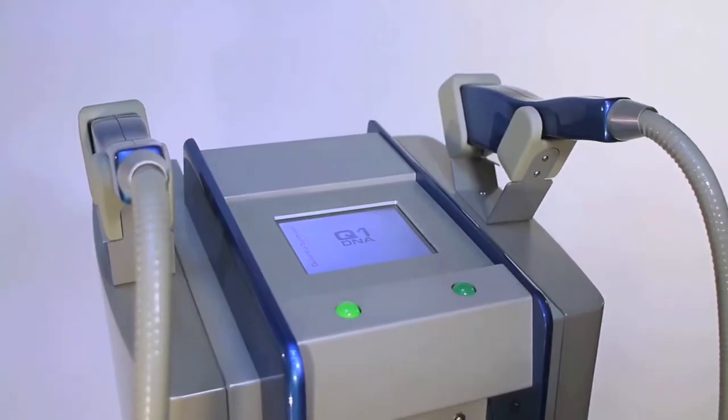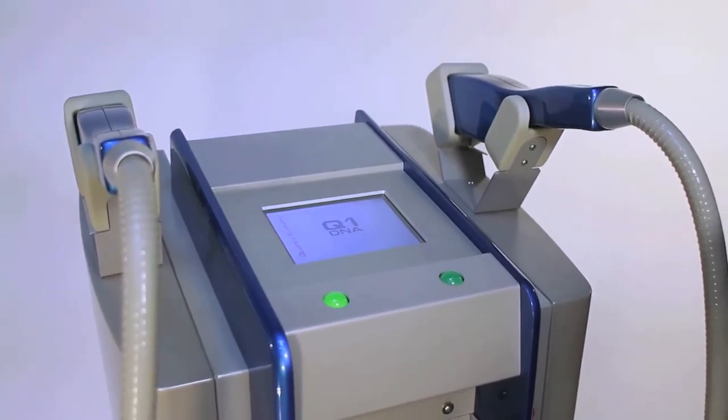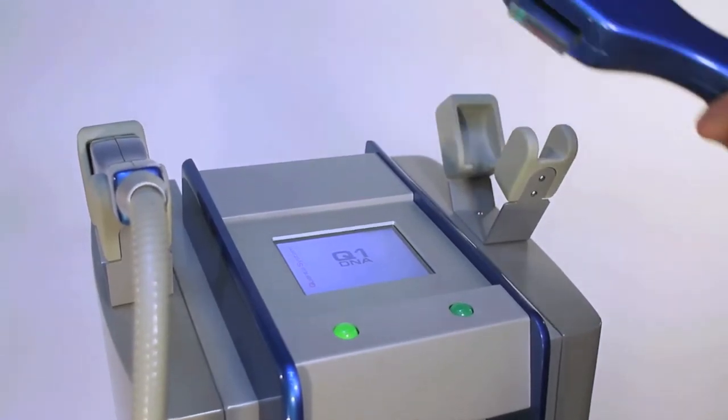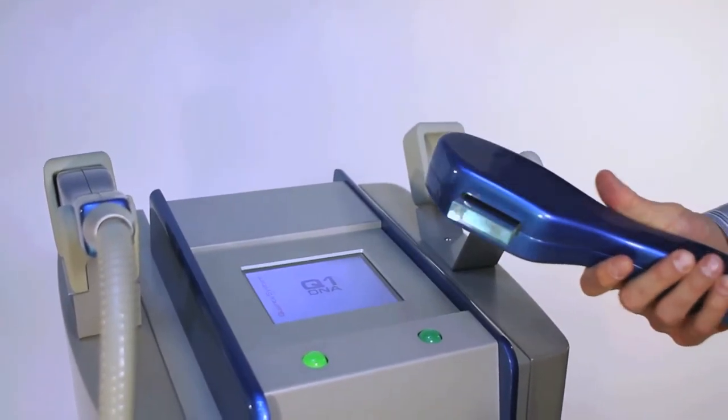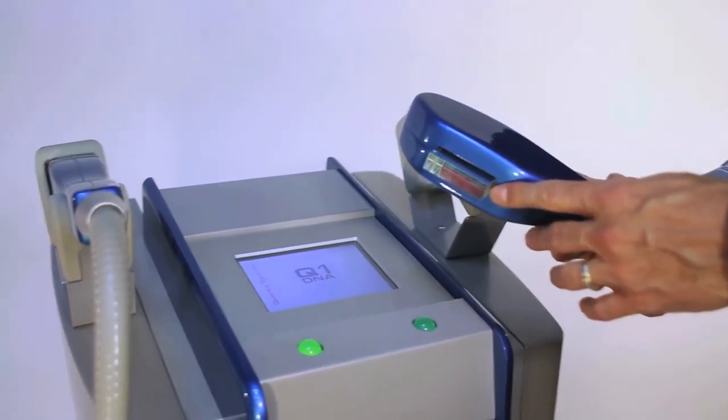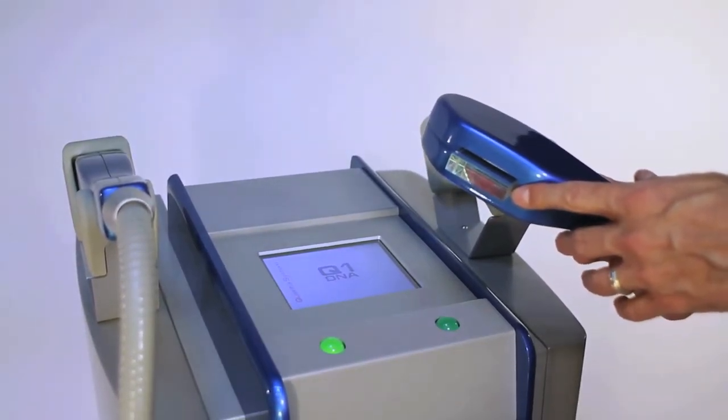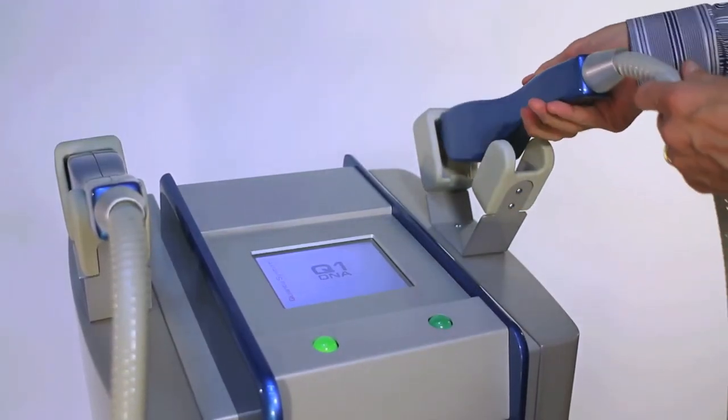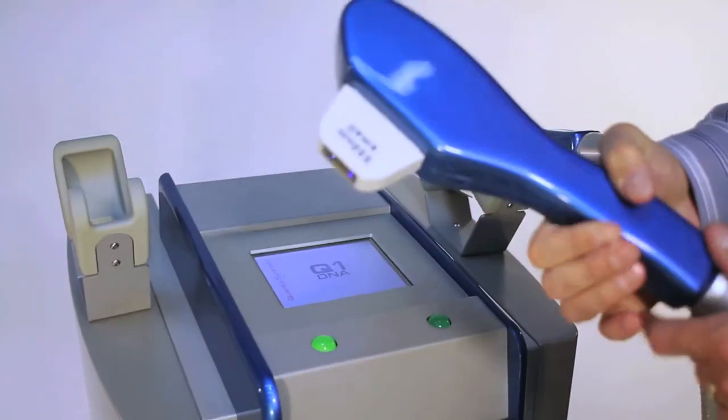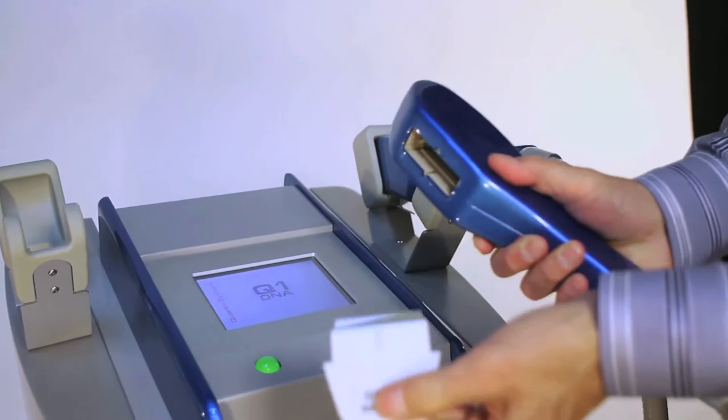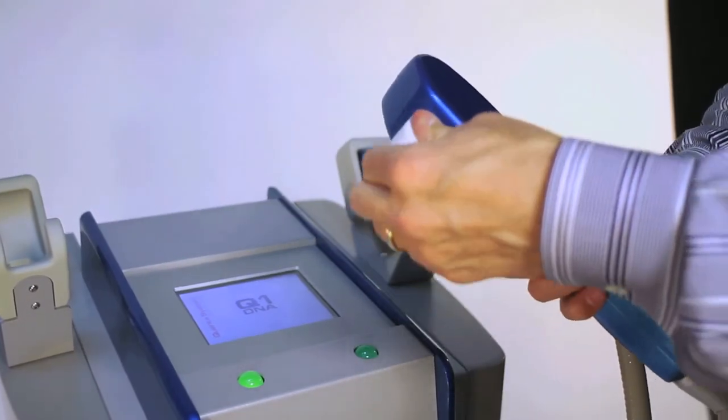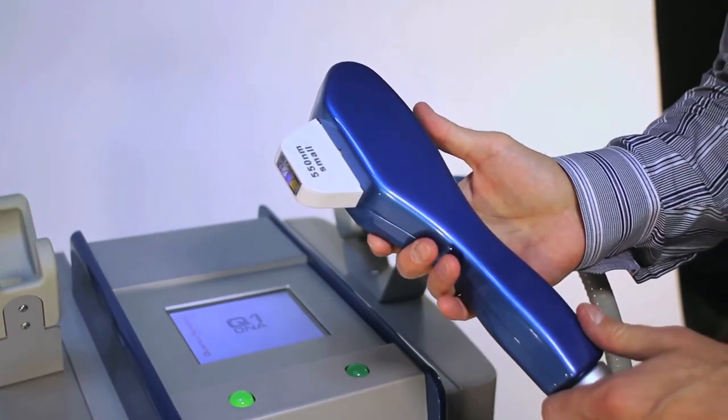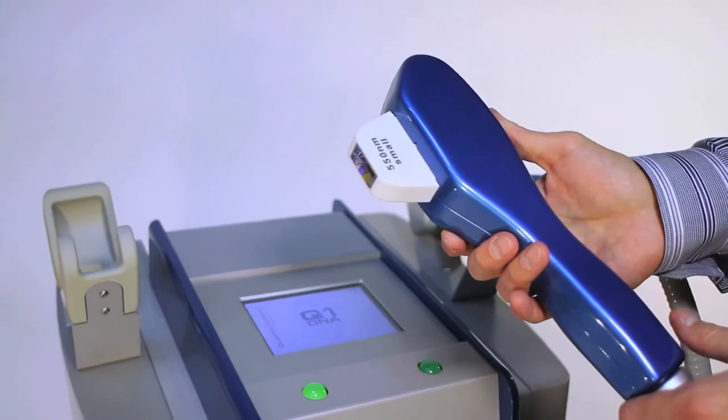This is the Quanta Eterna IPL. One of the unique features about this device is that it comes with two hand pieces. One of the hand pieces is going to have a fixed waveguide. We have this set up with a 625 waveguide filter for hair removal. The other hand piece is going to have an interchangeable waveguide.